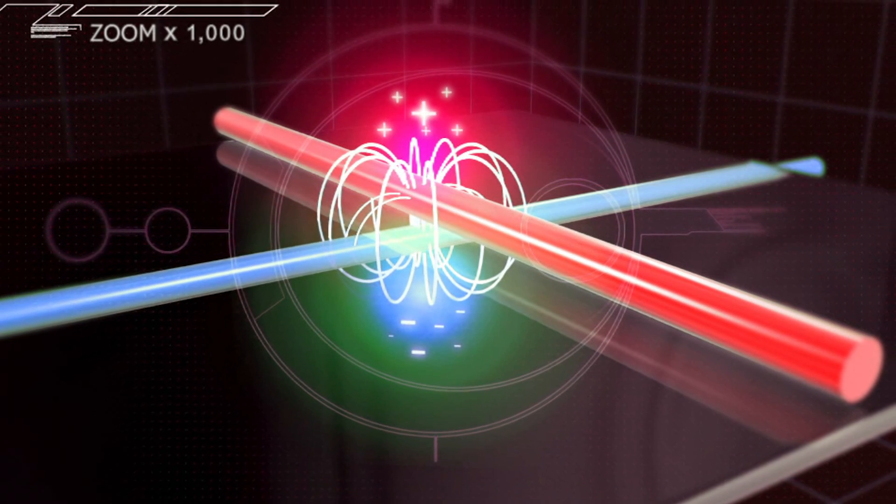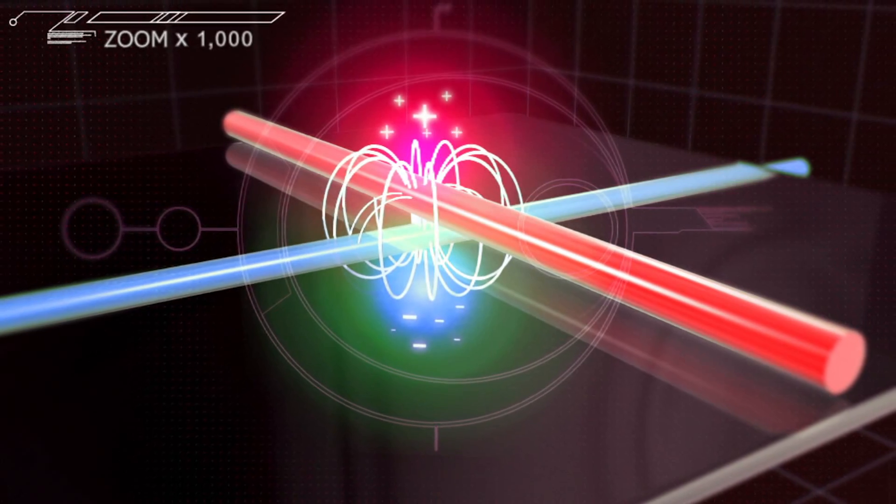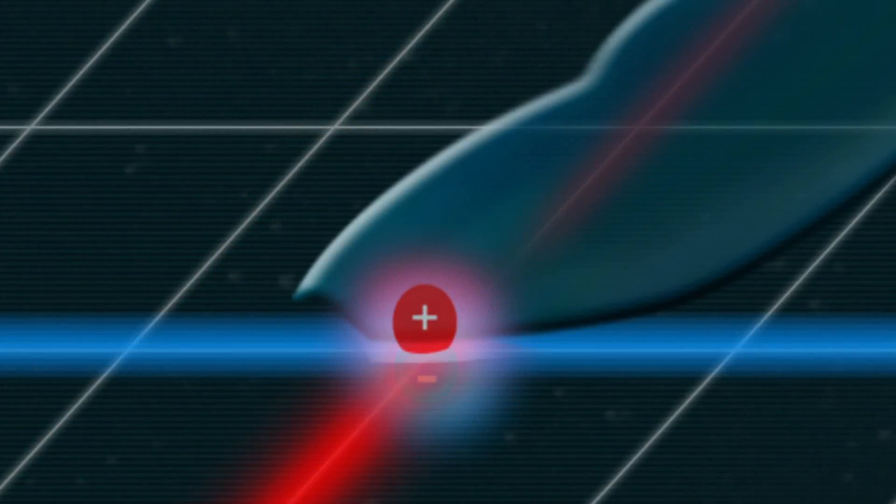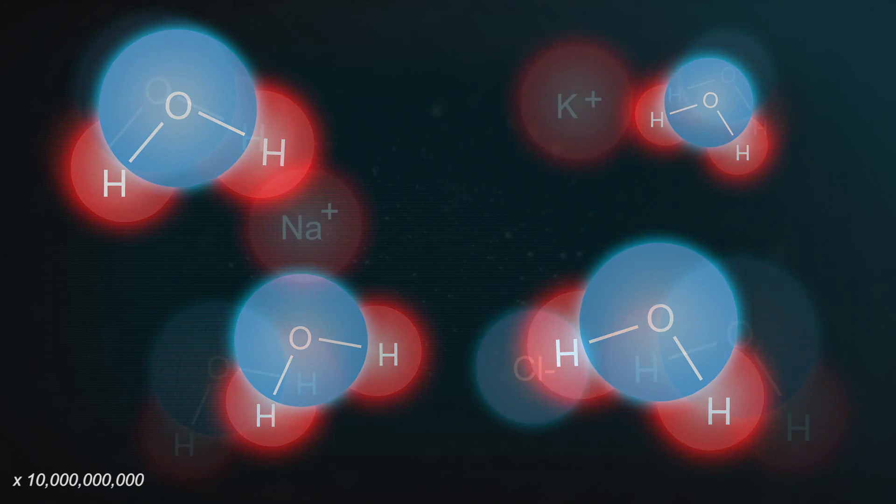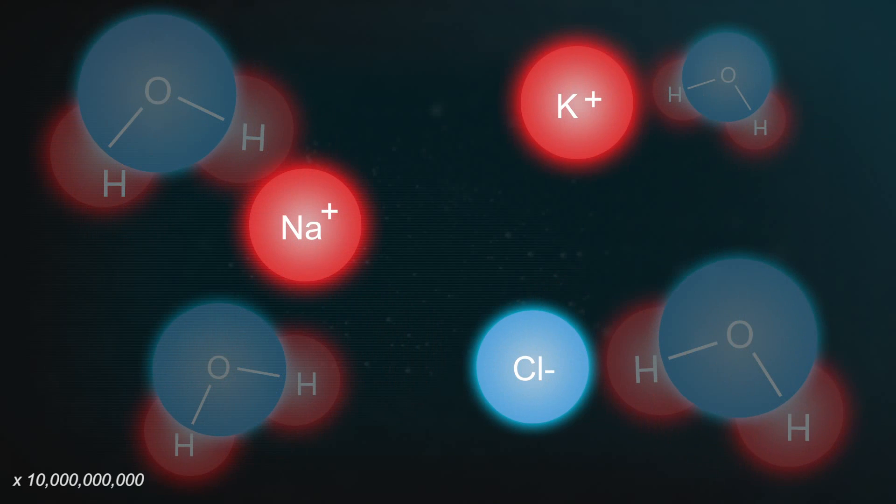Electric fields will push and pull on anything with an electric charge. And that's exactly what your phone's electric fields do to your finger. Your finger has got lots of positive and negative charges floating around in it. The ions from the salts that are dissolved in your blood and cells.